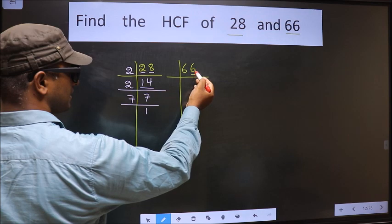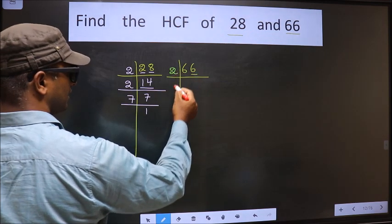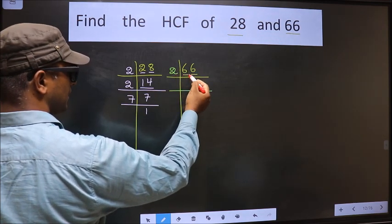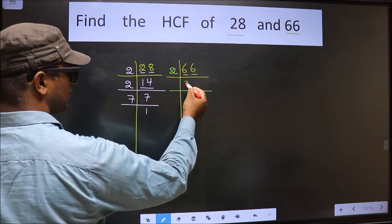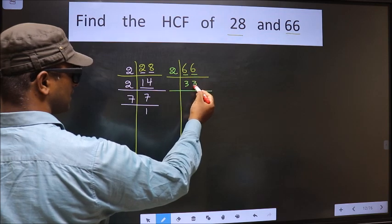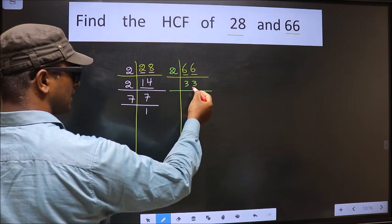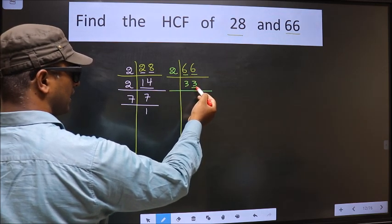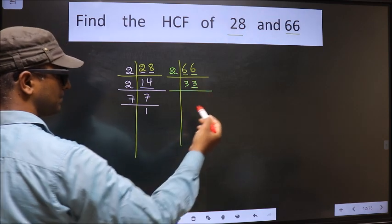For this number, the last digit is 6, even, so we take 2 here. The first number is 6. When do we get 6 in the 2 table? 2 times 3 is 6. The other number is 6. When do we get 6 in the 2 table? 2 times 3 is 6. Now for this number, the last digit 3 is not even, so this number is not divisible by 2.